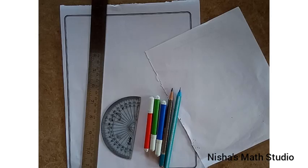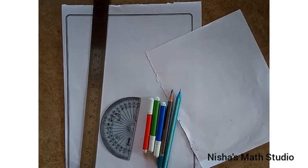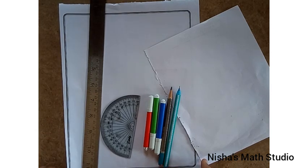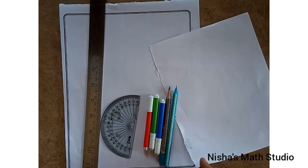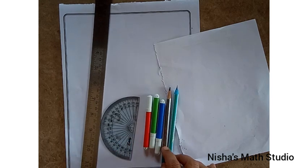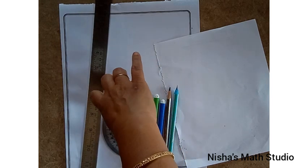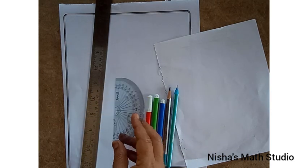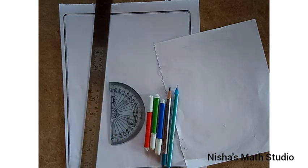The materials required for this activity is A4 sheet or a chart sheet, a rough page, some color pencils, scale, pencil and a protractor to measure the angles of the parallelogram.